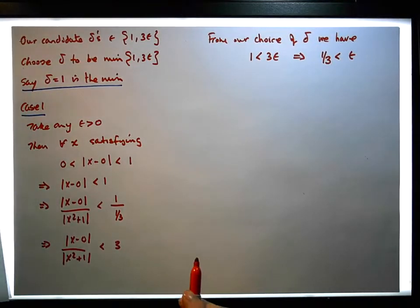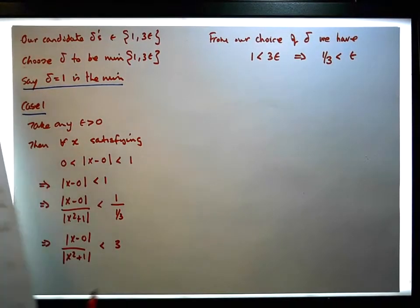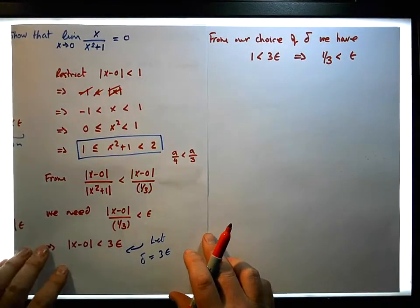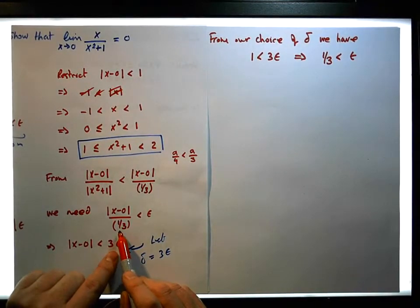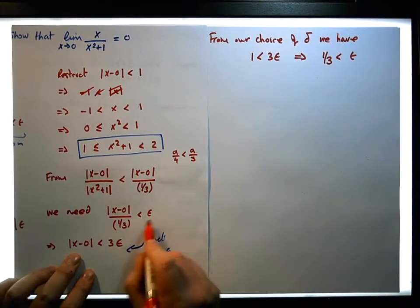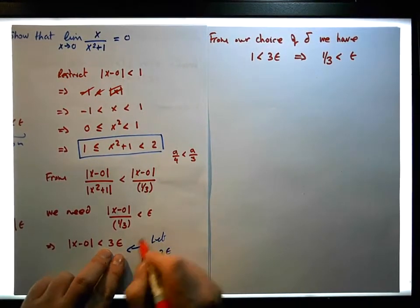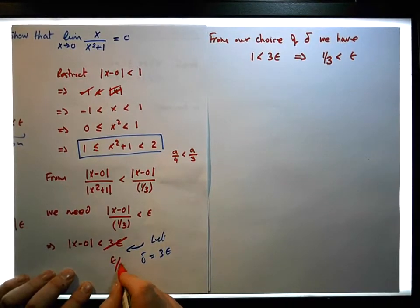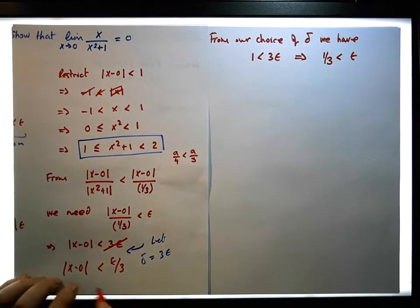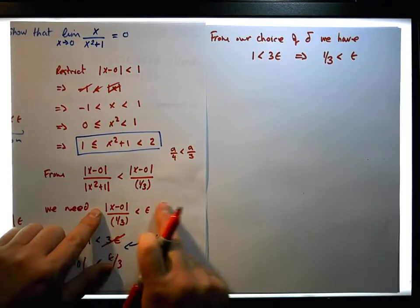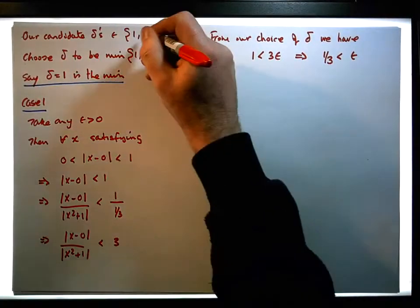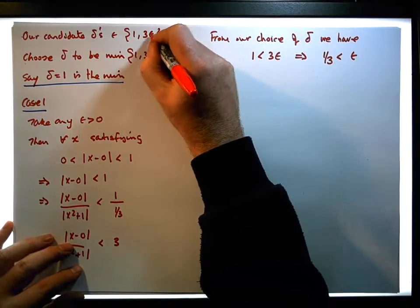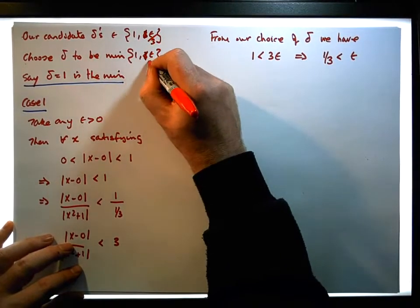Actually, I've made a little bit of an error here. What we should have chosen: from this particular fact, it should be saying that x minus zero is less than epsilon over three, not three times epsilon. Because when we multiply across by one third on both sides, the threes cancel and we get one third times epsilon, which is epsilon over three. So this should be epsilon over three.